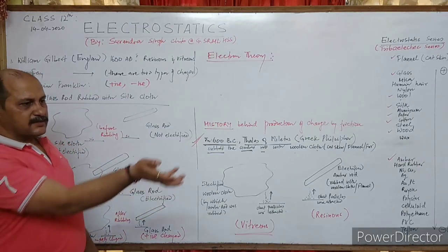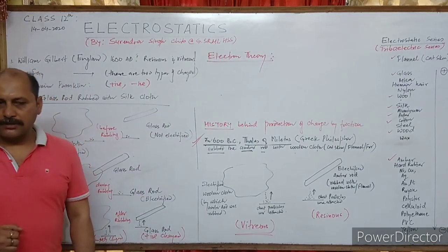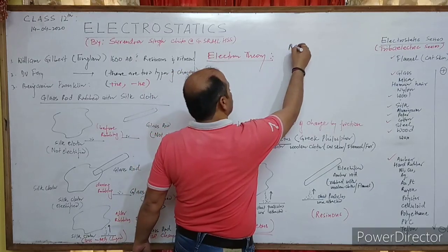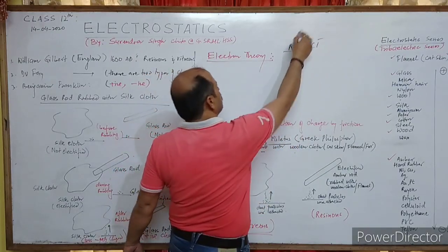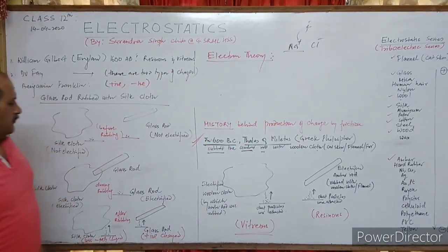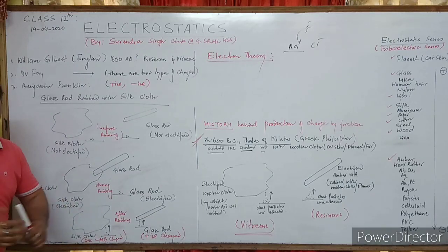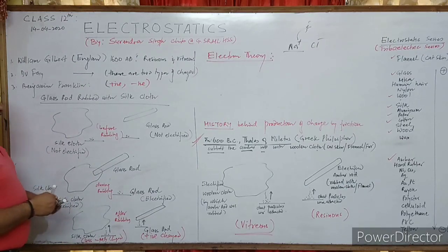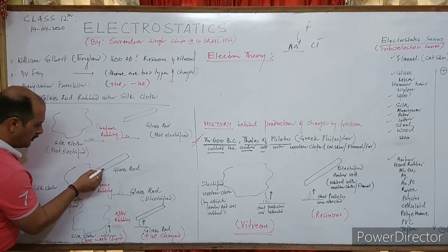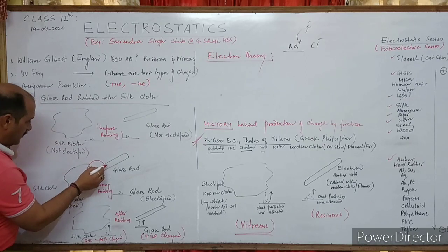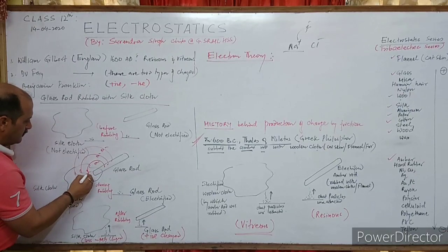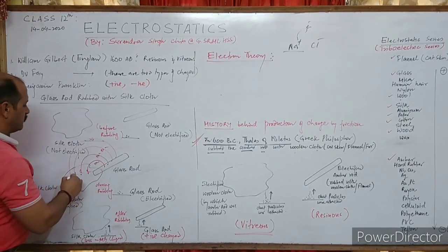If another atom takes one electron, it becomes negatively charged — just like in chemistry we have Na⁺ and Cl⁻. If Na loses one electron it becomes Na⁺; if Cl takes one electron it becomes Cl⁻. Same thing happens here — when they are rubbed together, electrons get transferred from the glass rod to the silk rod.